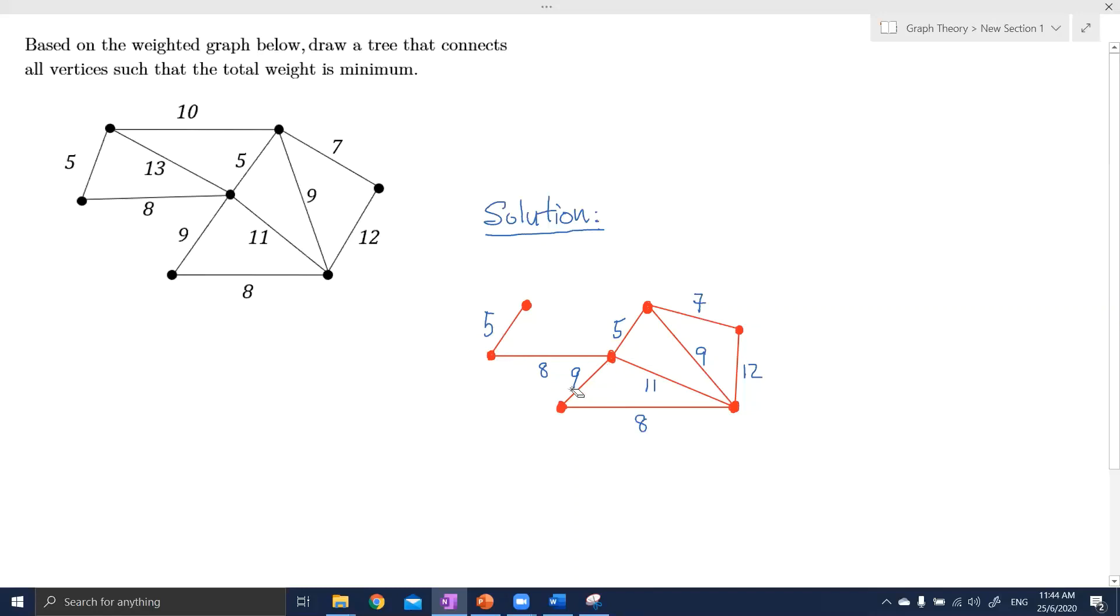So now we move to another cycle. Okay. This is not a tree yet because we still have a few cycles to go. So from this small triangle, which is a cycle again, we remove the maximum weight which is 11. So I remove this.